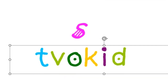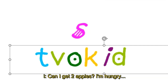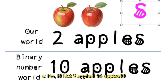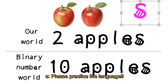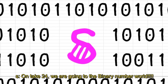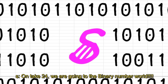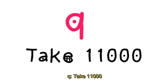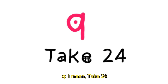Yay, that's an adventure! But before that, can I get two apples? I'm hungry. No, not two apples — one zero apples, please. Practice the language! Take 24 — we are going to the binary number world. Take one one zero zero zero — I mean, take 24!